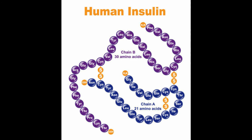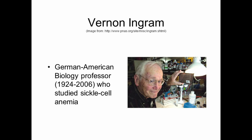Following Sanger's pioneering work, Vernon Ingram in 1956 discovered the molecular basis of sickle cell anemia, a protein defect inherited as a Mendelian disorder. By analyzing the structure of normal and sickle cell hemoglobin, Ingram, working at Cambridge University, showed that sickle cell anemia is caused by a change from glutamic acid to valine at a single position in the protein. The alleles of the genes encoding hemoglobin differ only in their specification of this one amino acid in the hemoglobin chain.